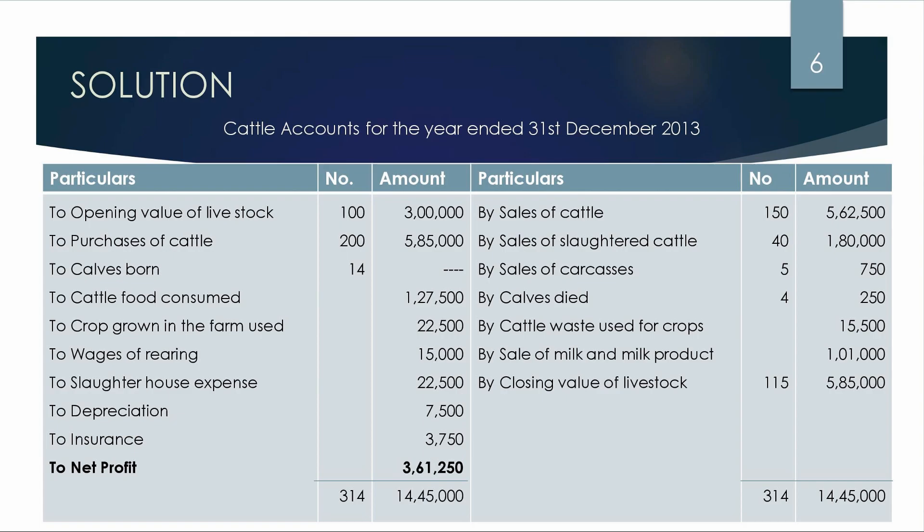Now let's prepare the cattle feed account. The opening stock is $1,00,000 and the amount is $3,00,000. The purchase is $2,00,000; that value is $5,85,000. For cattle food: opening stock is $30,000, purchase is $1,35,000, giving a total. Closing stock for cattle food comes to $1,27,500.